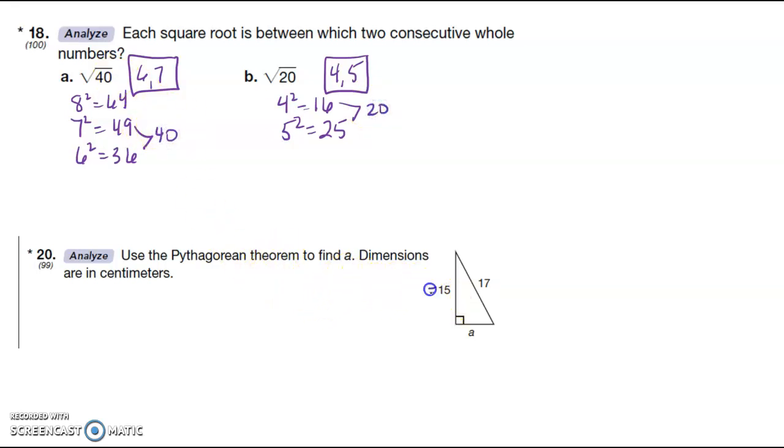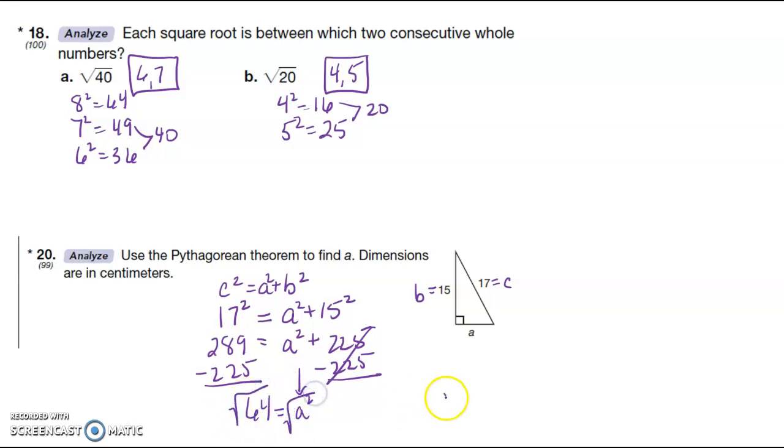Pythagorean theorem. Here we go. So this is B and this is C, and we're trying to find A. C squared is equal to A squared plus B squared. 17 squared is equal to A squared plus 15 squared. 17 squared is 289. 15 squared is 225. So we have to get rid of the 225 before we do the square root. I'm trying to get A by itself. And then I square root both sides. I get A is equal to 8.